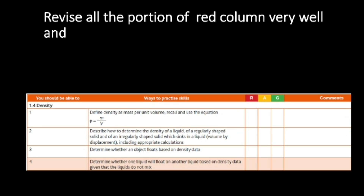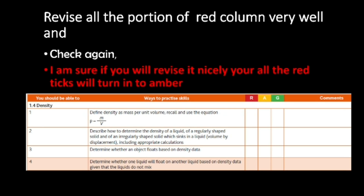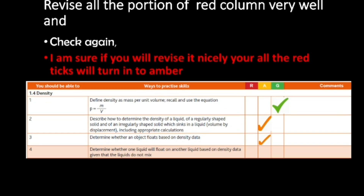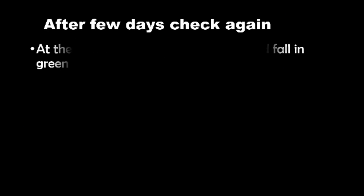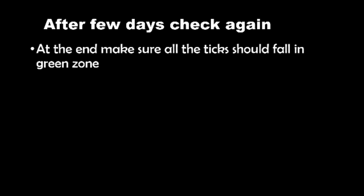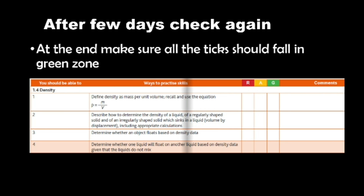After a few days, revise all the portions marked in red very well and check again. I'm sure if you revise nicely, all the ticks which are in red will move to amber. After a few more days, check again, and at the end make sure that all the ticks fall in the green zone.